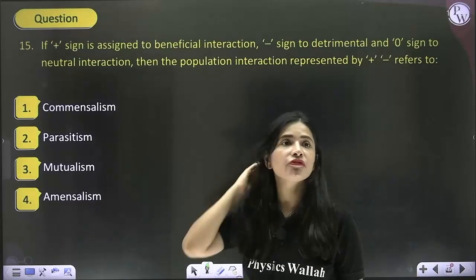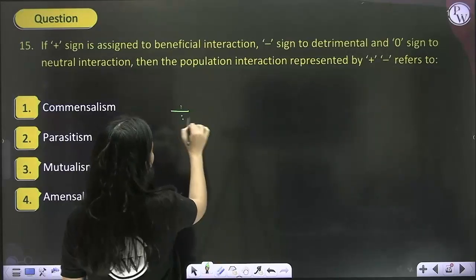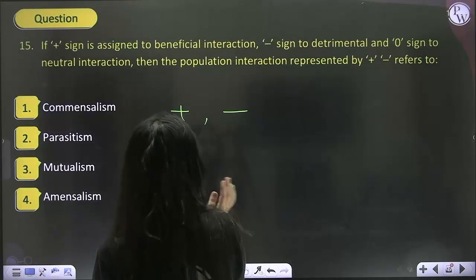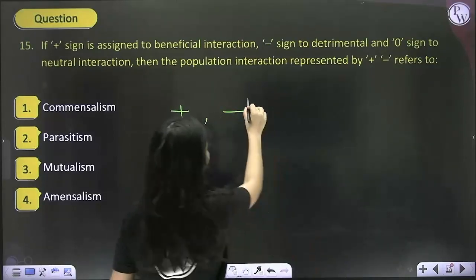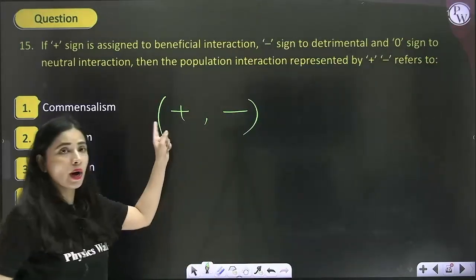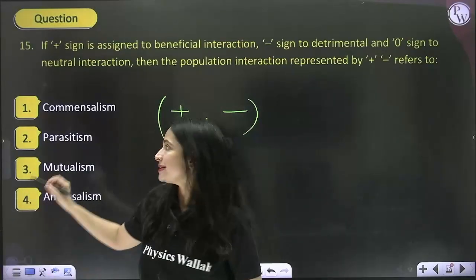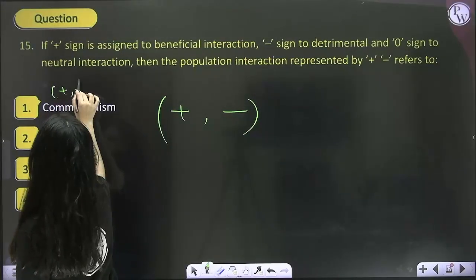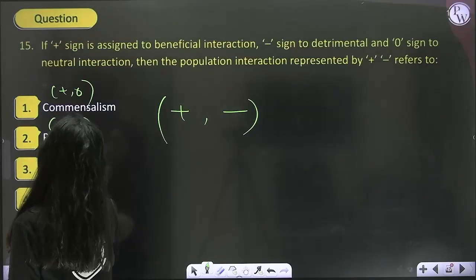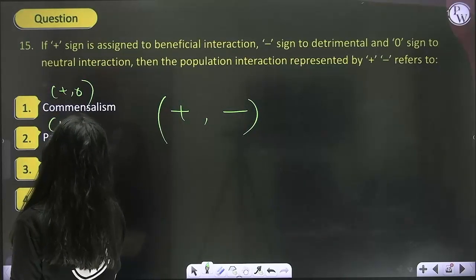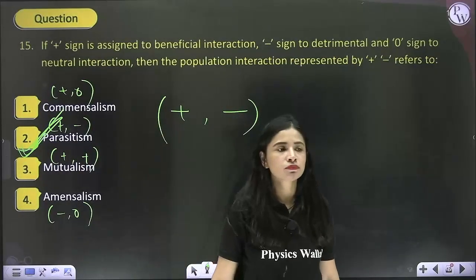The next question: if plus is assigned to beneficial interaction, minus to detrimental, and zero to neutral, then which interaction is plus-minus? Plus-minus means one benefits and another suffers a loss. Commensalism is plus-zero. Parasitism is plus-minus. Mutualism is plus-plus. Amensalism is minus-zero. So according to the question, the answer becomes option 2 — parasitism.